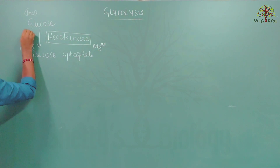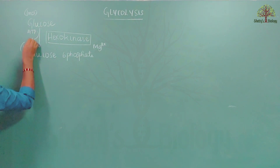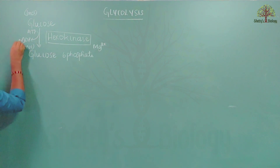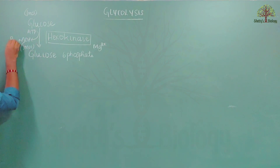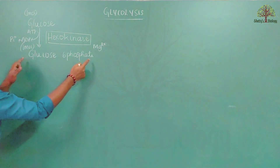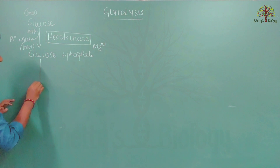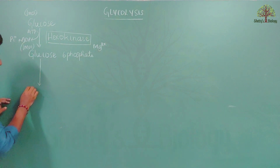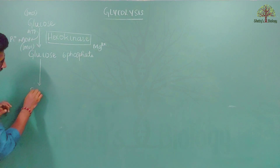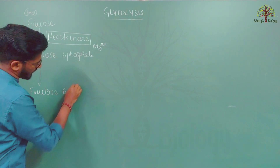In this process, one molecule of ATP is converted into ADP and inorganic phosphate. This glucose-6-phosphate is then converted into fructose-6-phosphate.